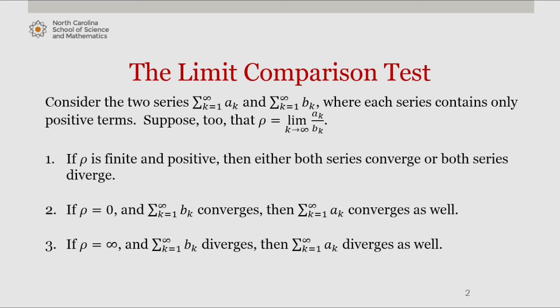If rho is equal to 0 and the series from k equals 1 to infinity of b sub k converges, then the series from k equals 1 to infinity of a sub k converges as well.